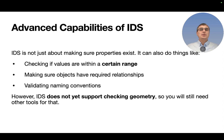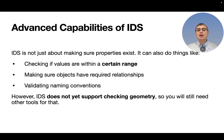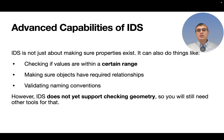What about the advanced capabilities of IDS? IDS is not just about making sure properties exist. It can also check if values are within a certain range, make sure objects have required relationships, and validate naming conventions. However, IDS does not yet support checking geometry, so you will still need other tools for that.